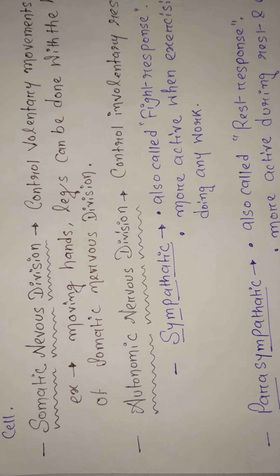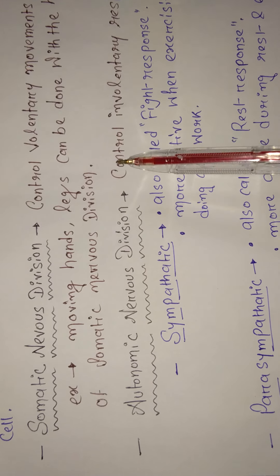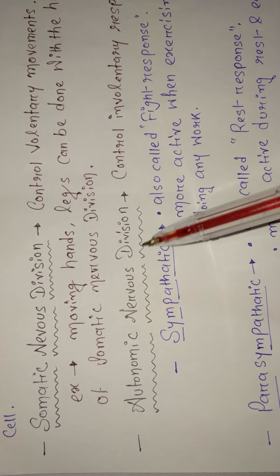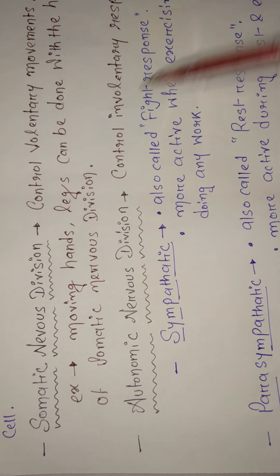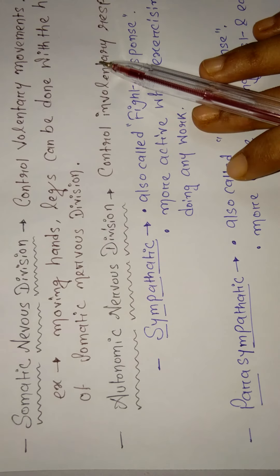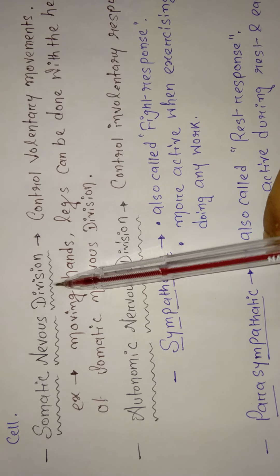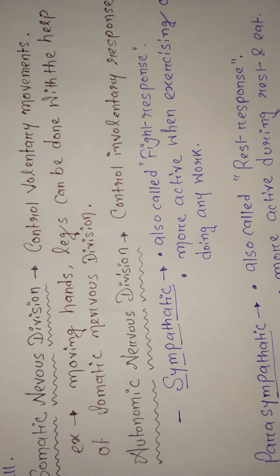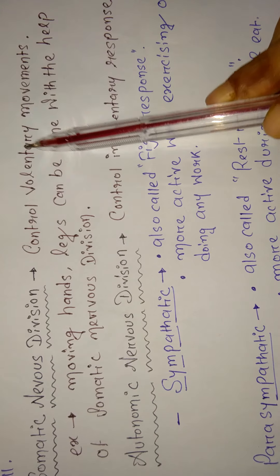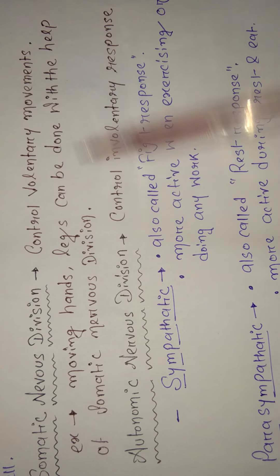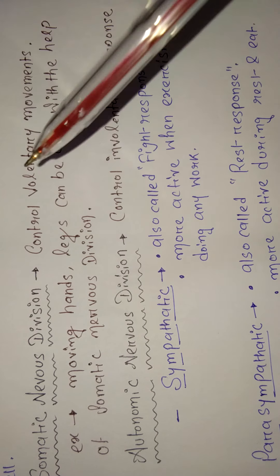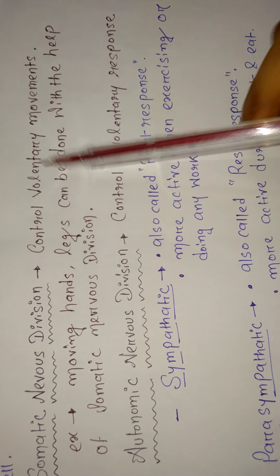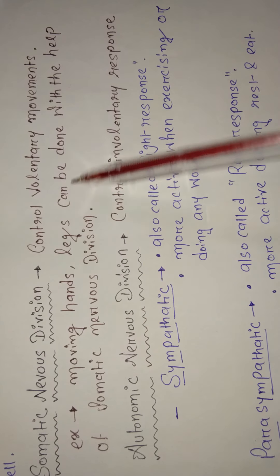Now let's study the somatic nervous system. The motor division has two types: somatic nervous system and autonomic nervous system. The somatic nervous system controls voluntary movements — movements we have control over, like moving our hands or legs. Example: moving hands and legs can be done with the help of the somatic nervous system.